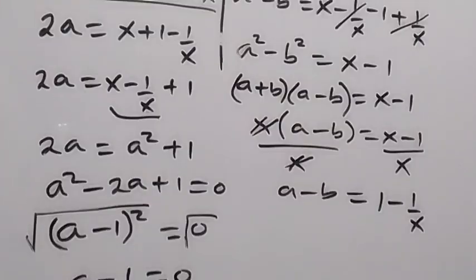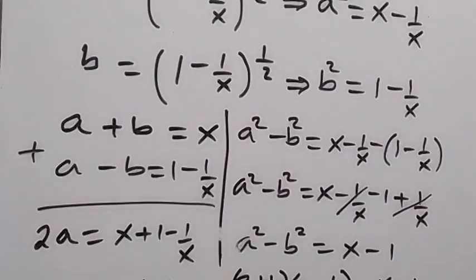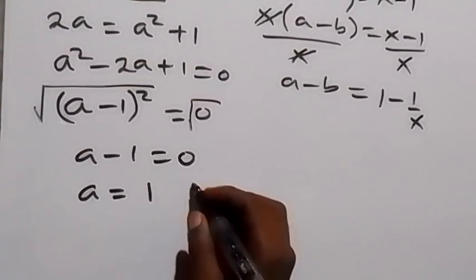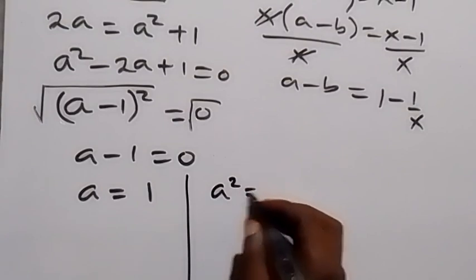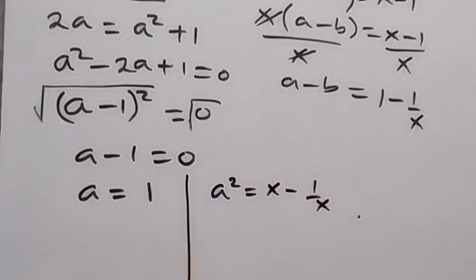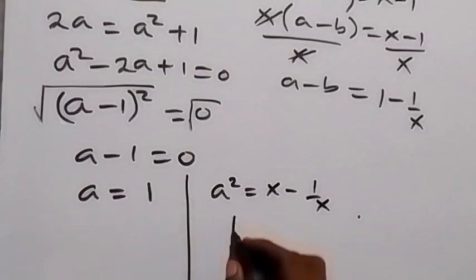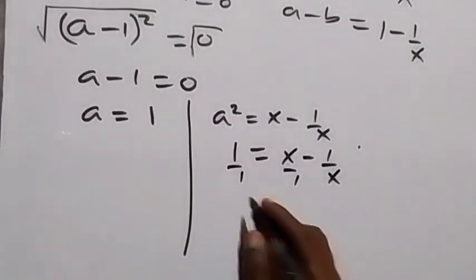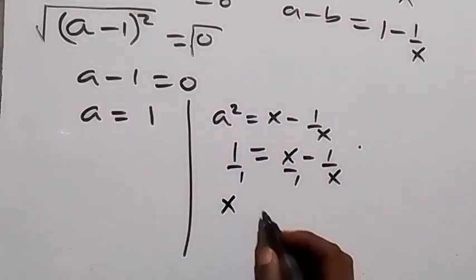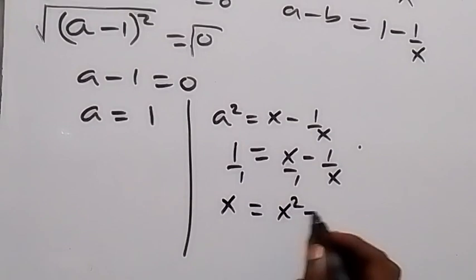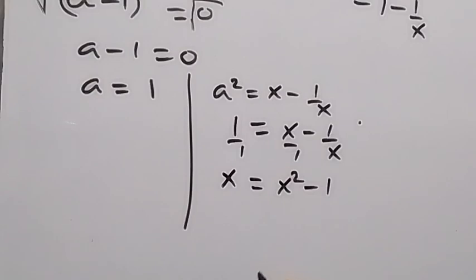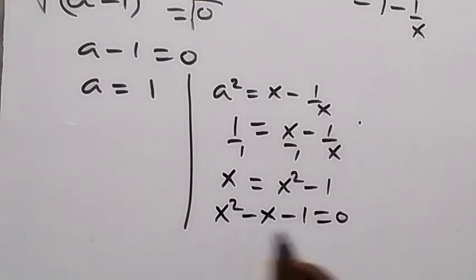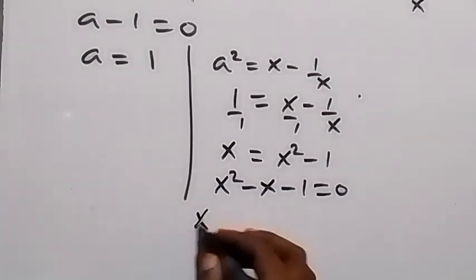Recalling that a squared equals x minus 1 over x, and since a equals 1, we have 1 squared equals x minus 1 over x, which gives 1 equals x minus 1 over x. Multiplying through by x: x equals x squared minus 1. Rearranging to form a quadratic: x squared minus x minus 1 equals 0.